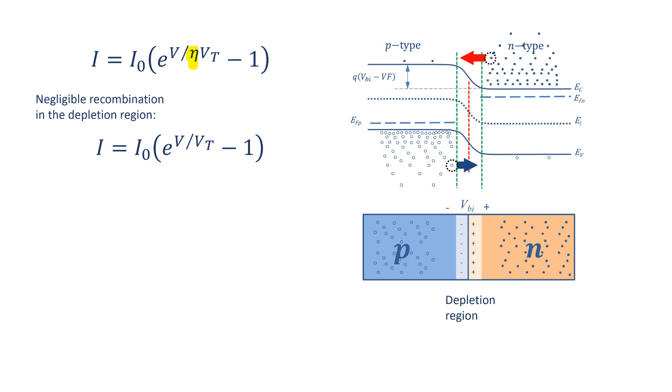But at small currents, or small diode voltages, the depletion region is wider, and the recombination in this region is significant and cannot be ignored. This reduces the rate of change in current, which can be shown by an eta larger than 1. In silicon diode, the maximum value of eta is 2 when there is maximum recombination in the depletion region.